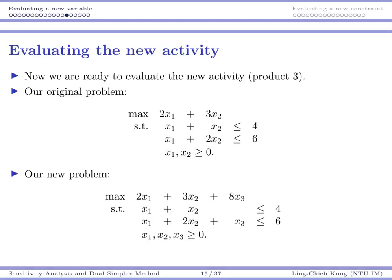So now let's see how all these things help us. We are now ready to evaluate our new activity, product three. Let's see how to do it. My original program is here, you've seen it many times. Our new program is here. I do have some new things: a new variable 8x3 in my objective function and this thing in my coefficient matrix.